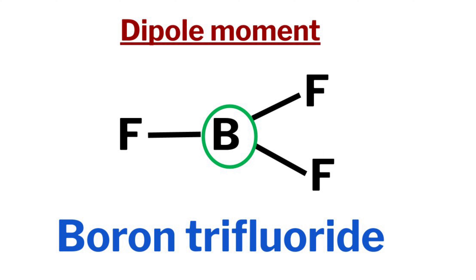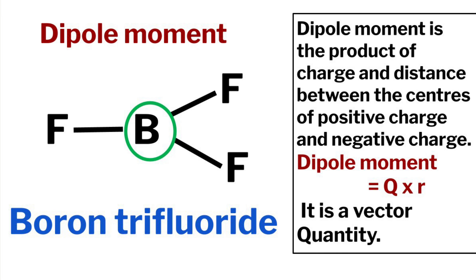Welcome to Aurora Chemistry for Everyone. We are here to discuss dipole moment in BF3. First, let us see what dipole moment is. Dipole moment is the product of the magnitude of the charge and the distance between the centers of positive and negative charge. It is a vector quantity. To find the dipole moment in a polyatomic molecule, let us see a beautiful mnemonic.